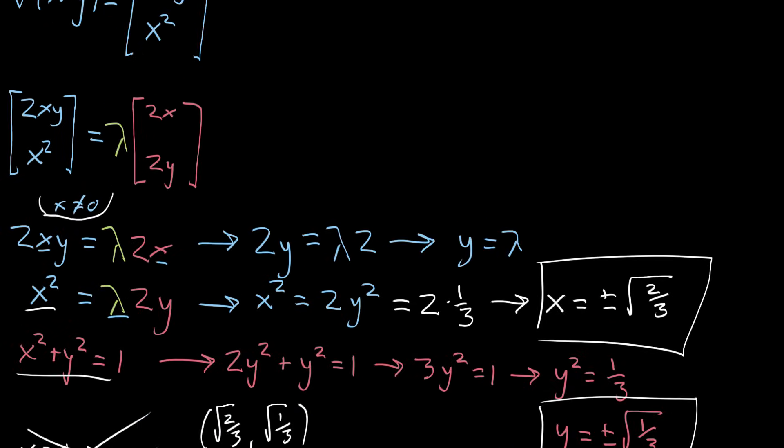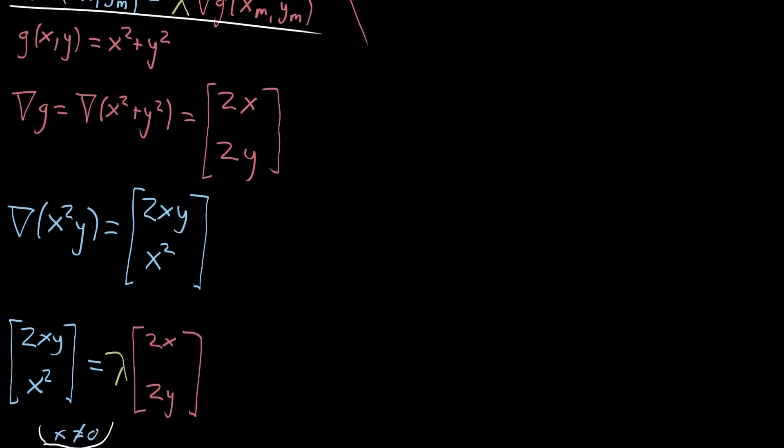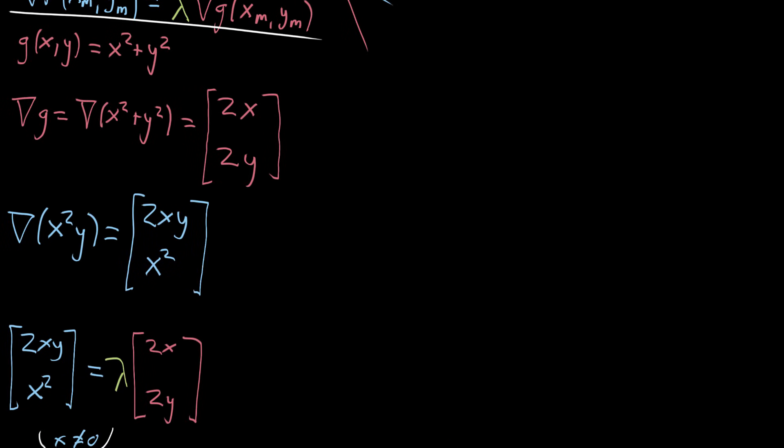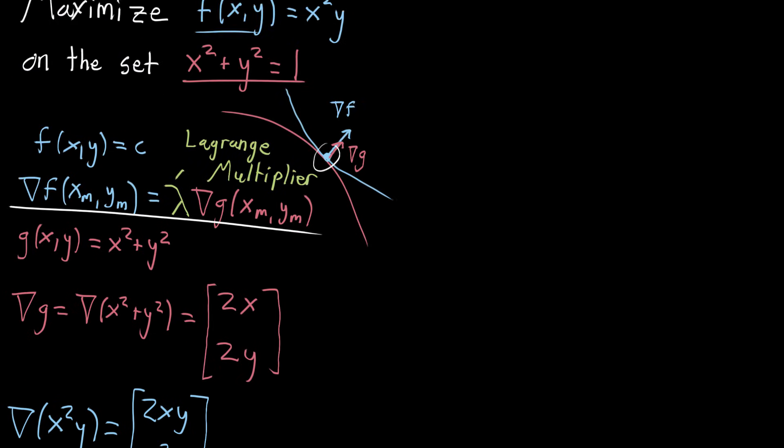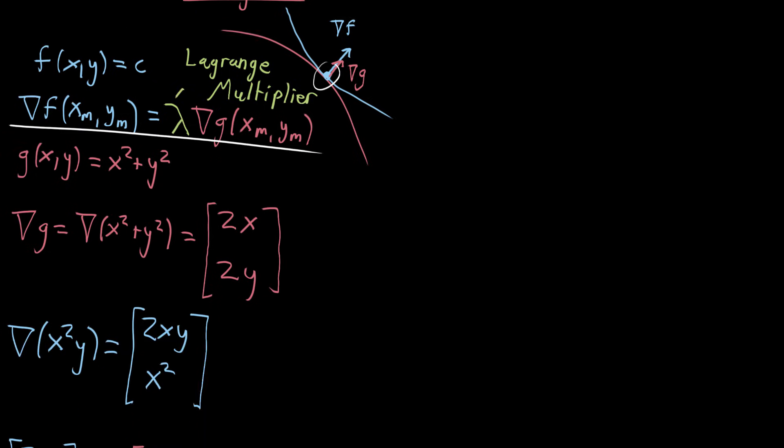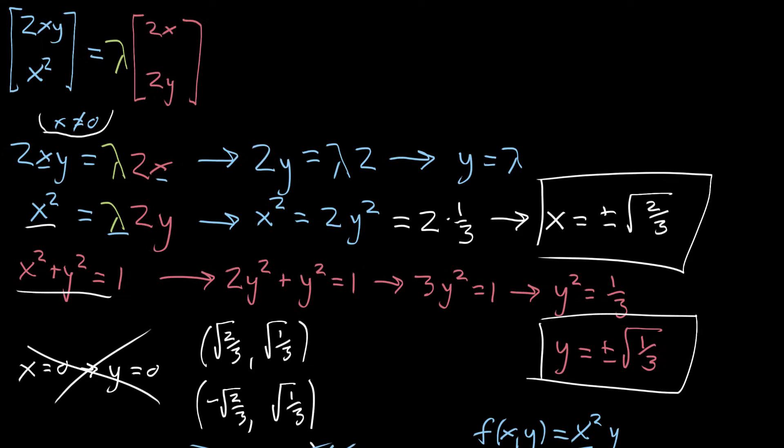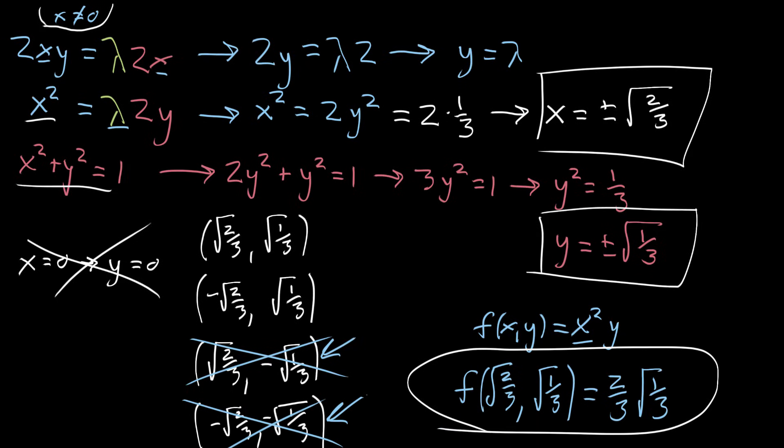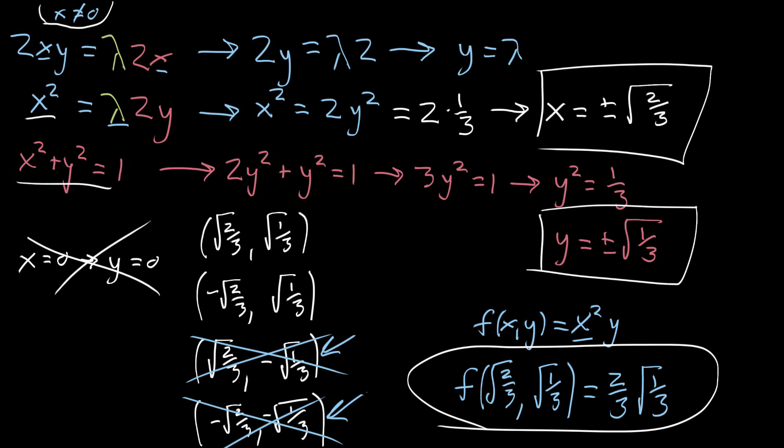But I do want to emphasize that the takeaway here is not the specific algebra that you work out going towards the end, but it's the whole idea of this Lagrange multiplier technique, to find the gradient of one function, find the gradient of the constraining function, and then set them proportional to each other. That's the key takeaway. And then the rest of it is just making sure that we check our work and go through the minute details, which is important. It has its place. And coming up, I'll go through a few more examples.